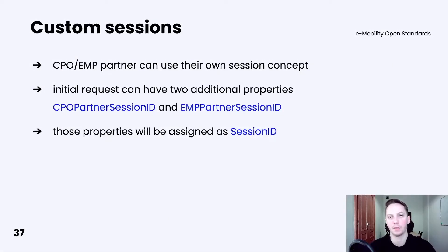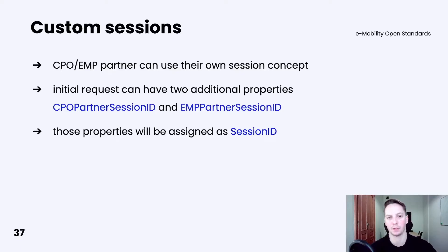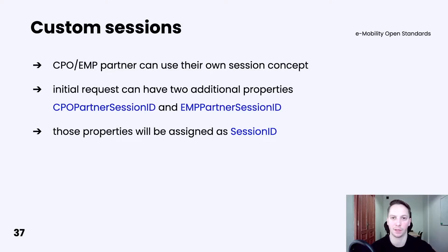Hubject also offers the possibility to use your own session mechanism by adding two additional properties to each initial request: CPO partner session ID or EMP partner session ID. If the value in one of those properties is provided, then it will be used as a session ID after the initial request. The same value, beside the session ID, will also be returned as a CPO partner session ID or EMP partner session ID in order to make processing a little bit easier.